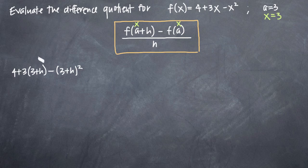So as you can see, we just took 3+h, plugged it in for x everywhere into our original function, and this whole piece here will replace f(a+h) in our difference quotient formula.